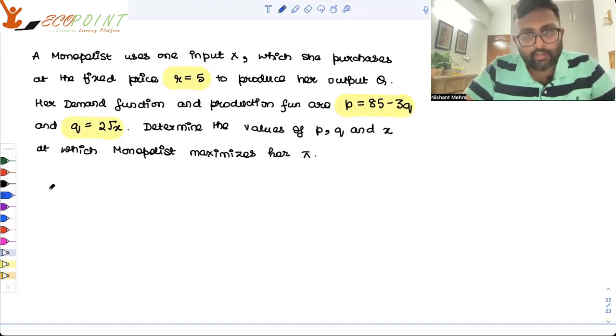So what are the values of p, q and x at which the monopolist is going to maximize her profit?